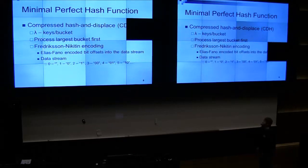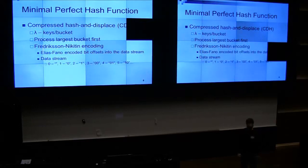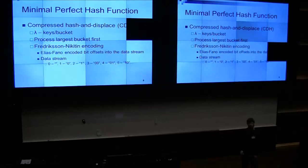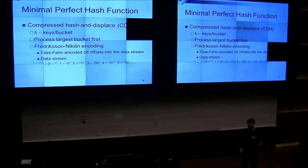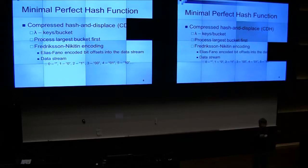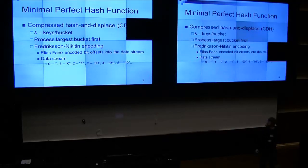So, minimal perfect hash functions. As I was saying, Compressed Hash and Displace. There is one parameter we're going to look at: lambda, the number of entries per bucket. A normal number for this is like three or four. You have N elements, N buckets, and you do a modulus to put them all into buckets. Then you sort the buckets so you can process the largest bucket first.